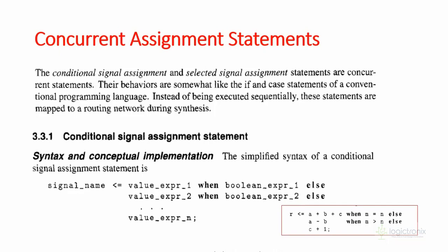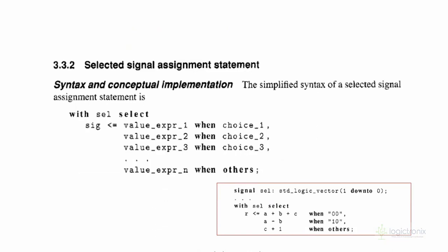Some concurrent statements actually include sequential statements inside them. For example, the when-else statement — this is a conditional single-assignment statement. The output R is assigned A plus B plus C when M equals N, else A minus B is sent to R when M is greater than N, else another value is transferred to R. So, it checks this Boolean expression: if the Boolean expression is true, it sends the value expression to the signal name.